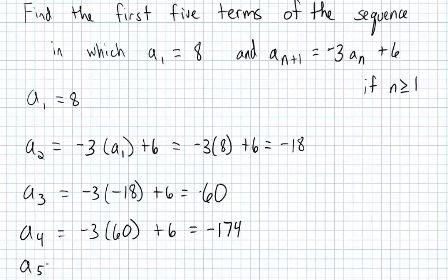And then A sub 5 is going to be negative 3 times negative 174 plus 6. That's going to be 522 plus 6, which is 528. So the first five terms are 8, negative 18, 60, negative 174, and 528.